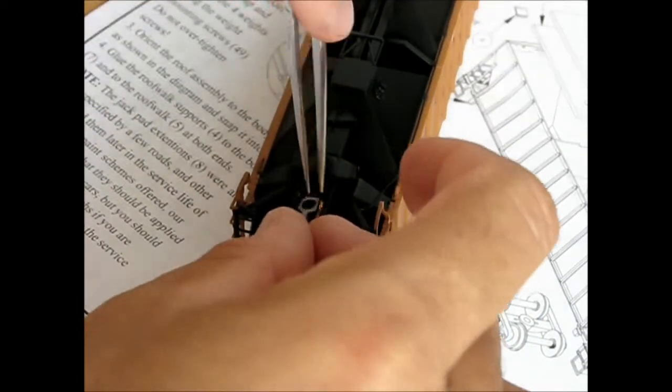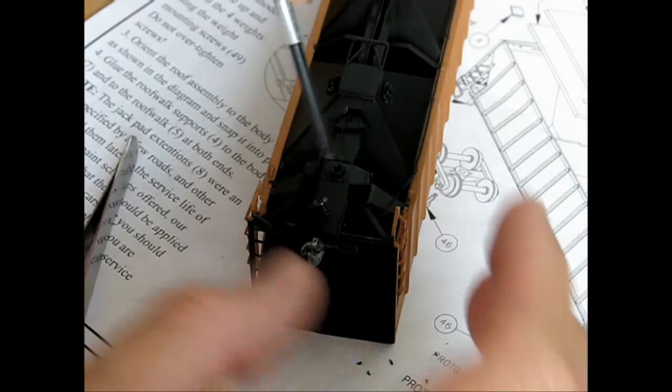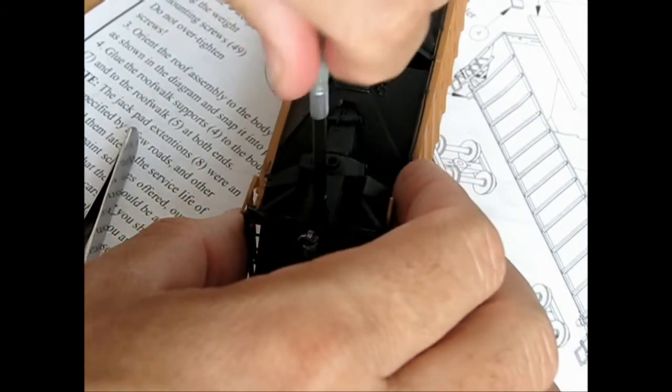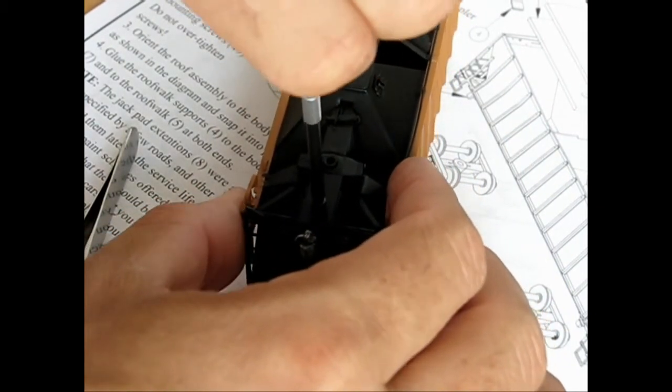After securing the couplers, the train-line hoses and coupler cut levers were added from my own stock, as these parts were not supplied with the kit.